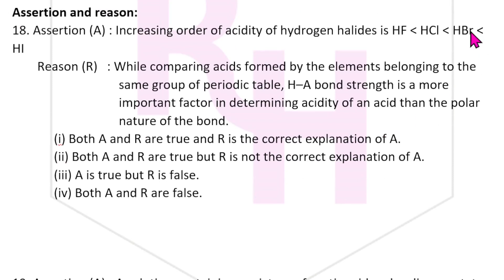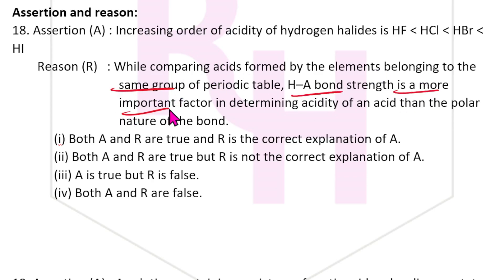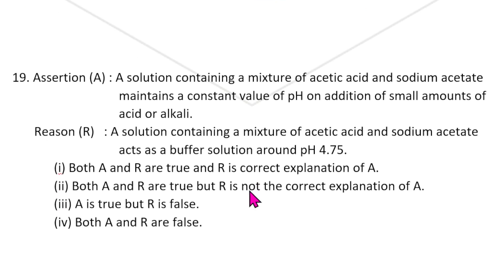Eighteenth question: Increasing order of acidity of hydrogen halides: HF < HCl < HBr < HI. Going down the group, this is correct. When comparing acids formed by elements of the same group, H–A bond strength is the more important factor. Both statements are correct and R is the correct explanation. The answer is option 1.